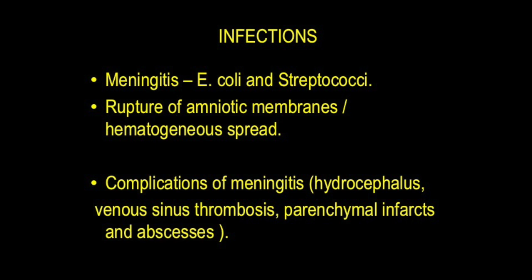Infections — meningitis. The commonest organisms are Escherichia coli and streptococci, found in cases of bacterial neonatal meningitis. You can have hematogenous spread or rupture of amniotic membranes as an intrapartum cause. Complications like hydrocephalus, venous sinus thrombosis, parenchymal infarcts, and abscesses can be followed up.